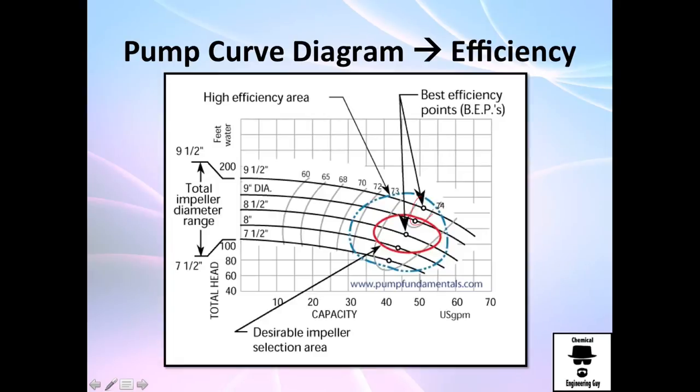So we got the 74, we got the 73. So this will be the best efficiency area or zone or range. So you want to operate near this. The good thing is that in this case we can operate all these size of diameters.